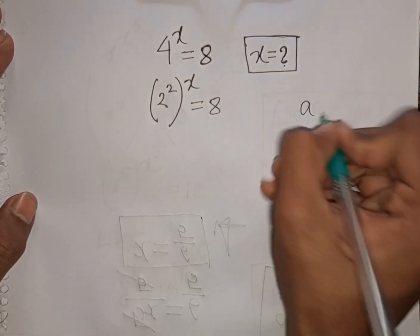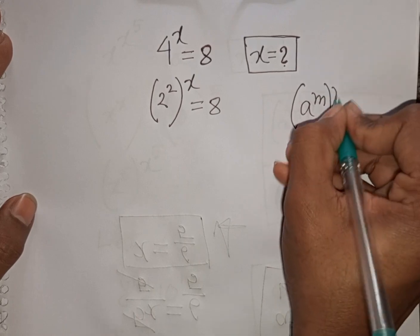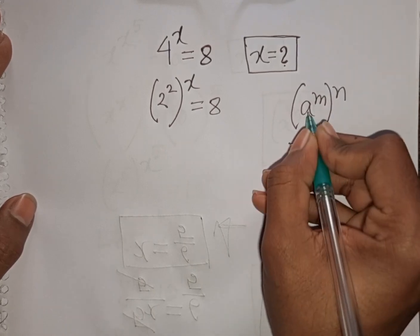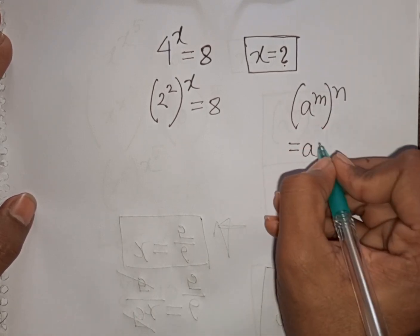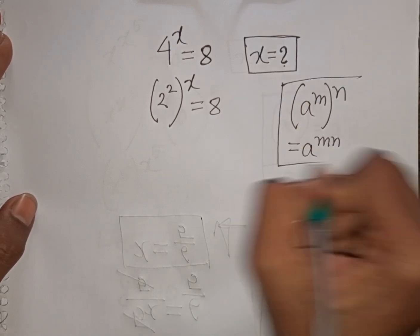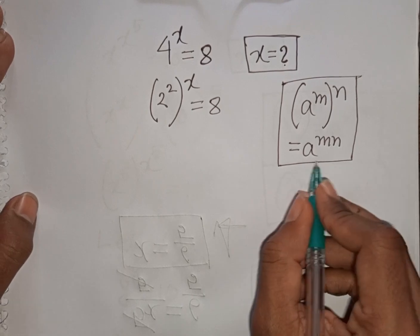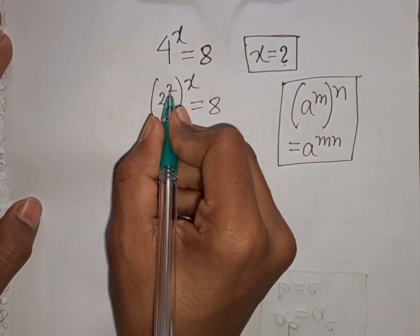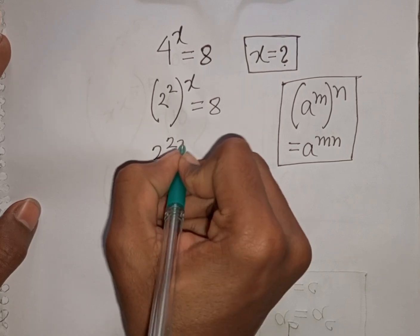Now here we can apply this formula: a power m bracket power n is equal to a power of m times n, that means it will be mn. So according to this formula I can write here 2 power of 2 times x, that means it will be 2x.